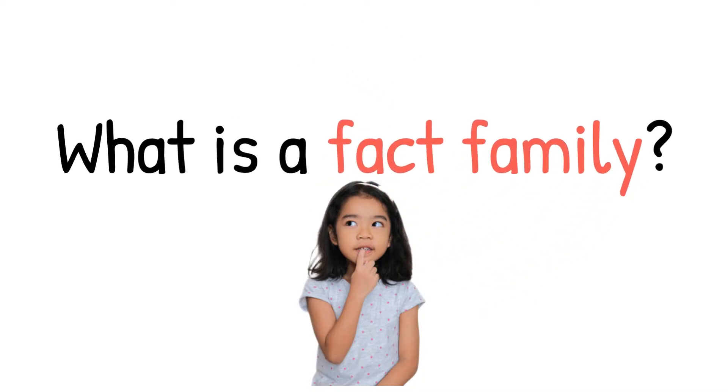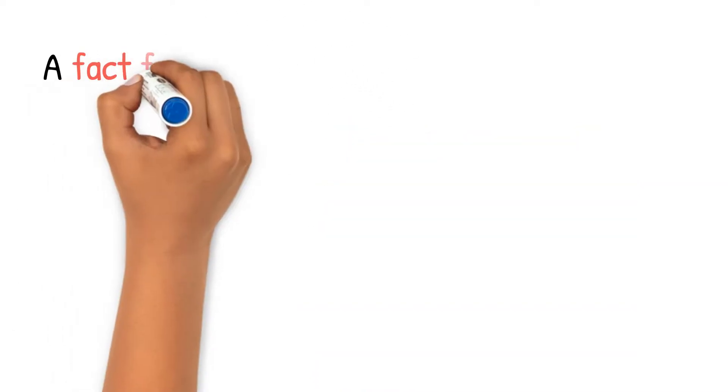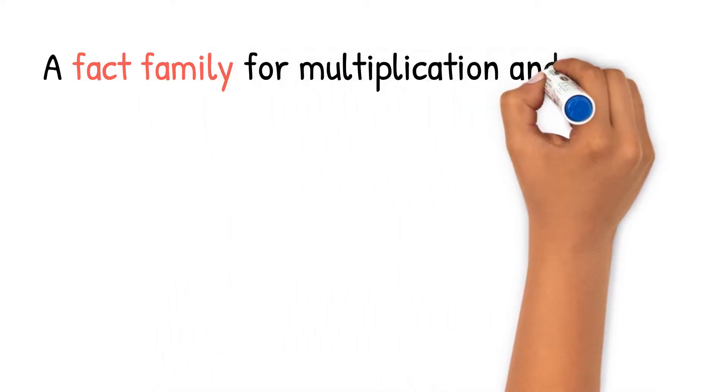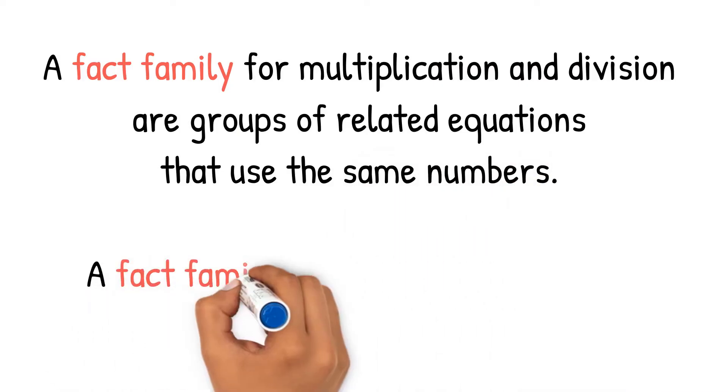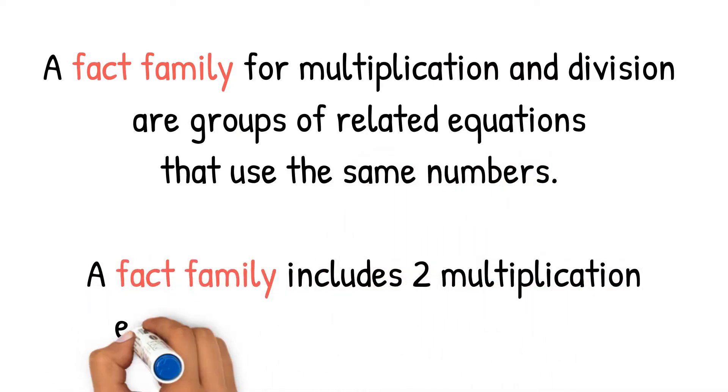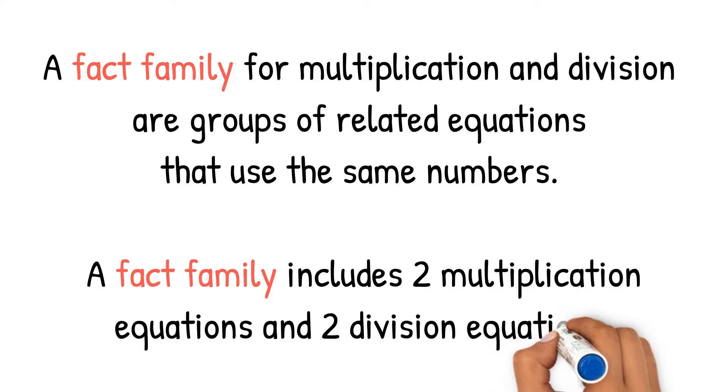What is a fact family? A fact family for multiplication and division are groups of related equations that use the same numbers. A fact family includes two multiplication equations and two division equations.